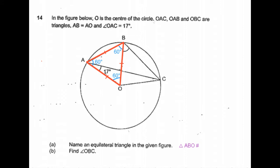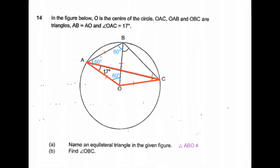Second part of the question is to find angle OBC. Let's look at the triangle OAC. OA is equal to OC because both are the radius of the circle. That means the triangle OAC is an isosceles triangle. So the sides OA and OC are equal, which means the angles opposite to the sides OA and OC will be equal as well.